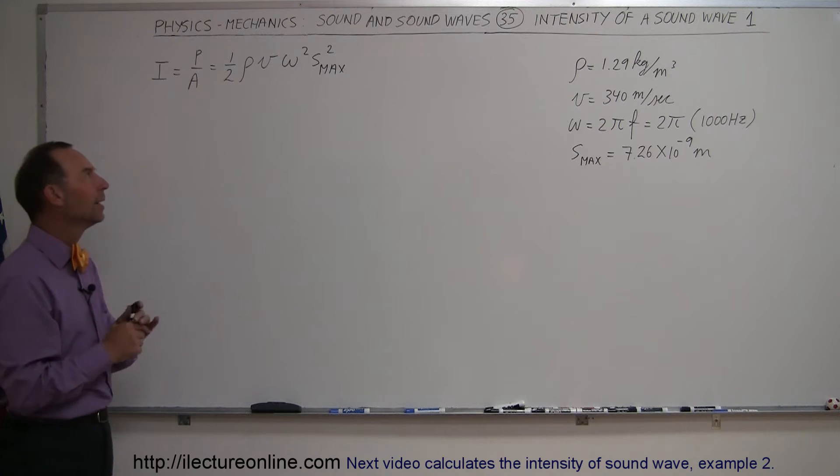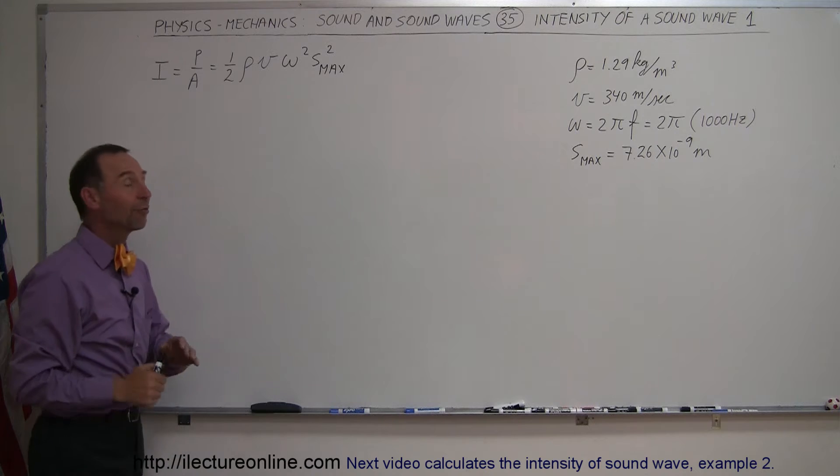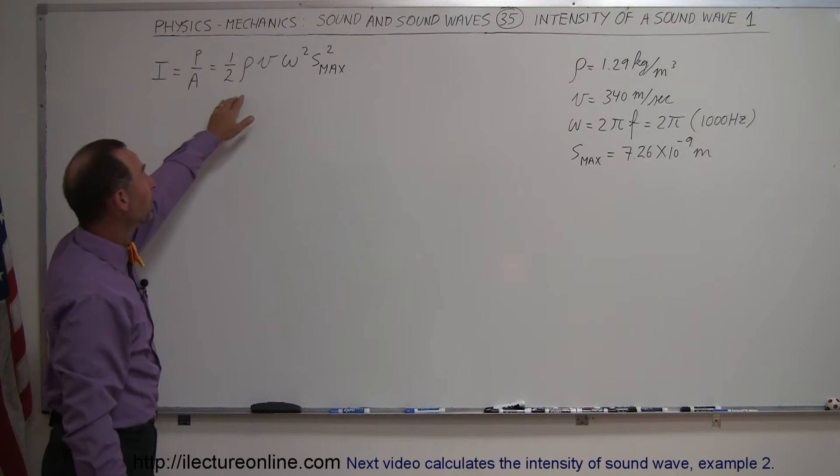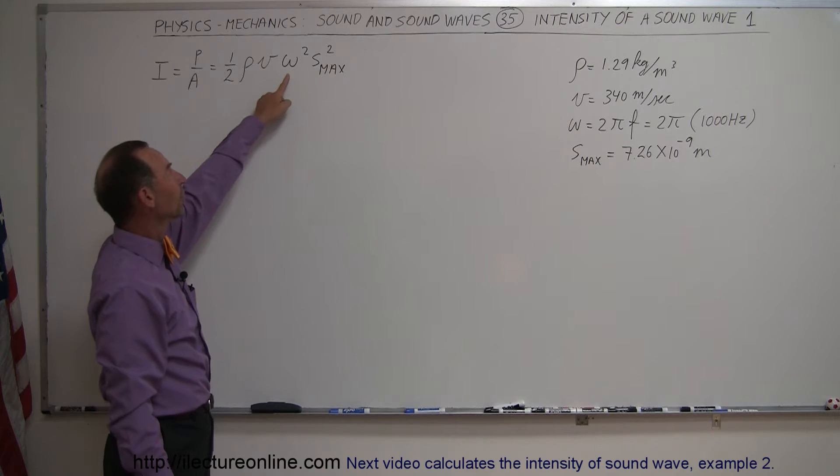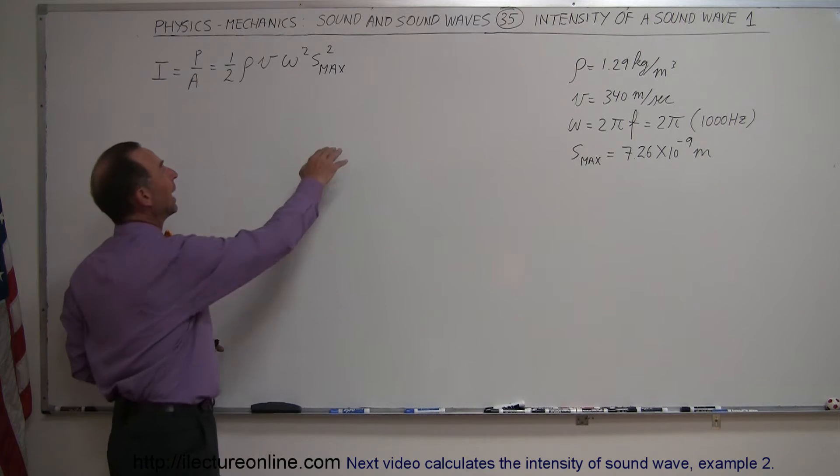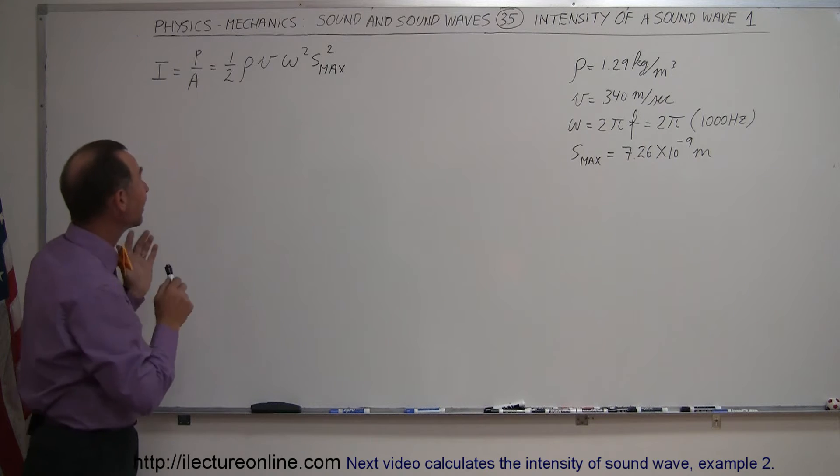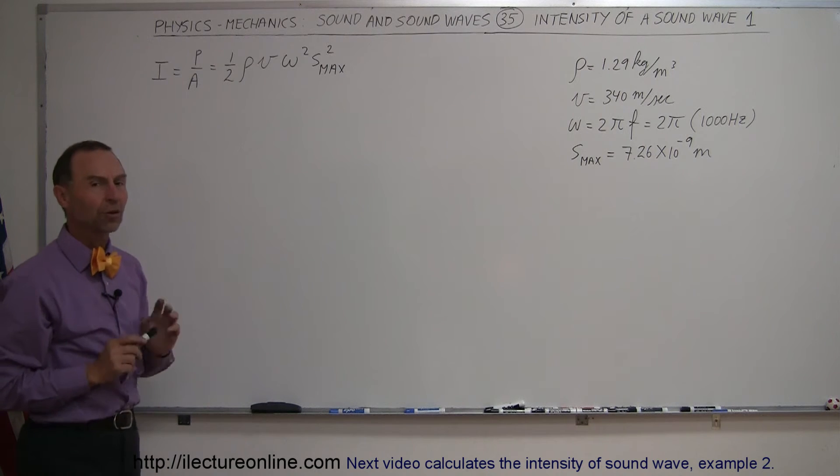But now we're going to tie that in with some physical variables within a sound wave. For example, the density of air, the velocity of sound in air, the frequency of the sound, and then of course the maximum displacement. And we can actually find the intensity using those parameters.